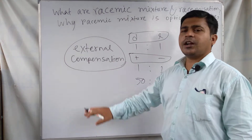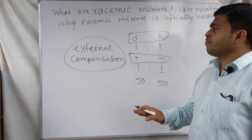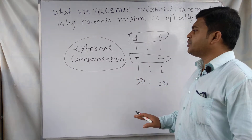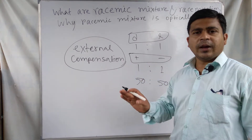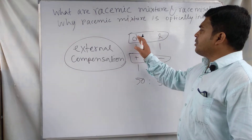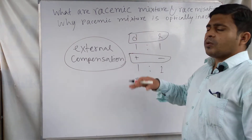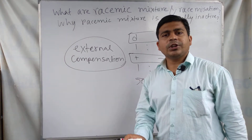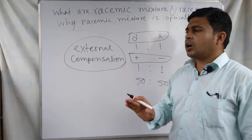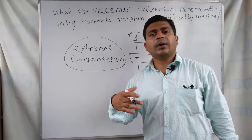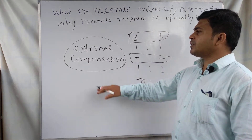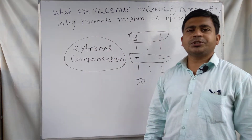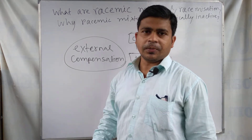Due to external compensation, in the mixture the D and L isomers are both present in equal amounts, and as a result they cancel each other's optical rotation — equal in magnitude and opposite in direction. Therefore, the racemic mixture is optically inactive in nature.